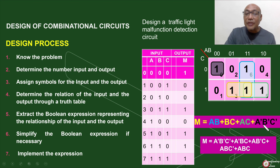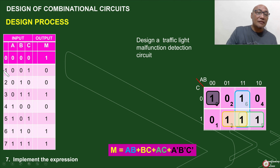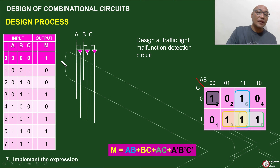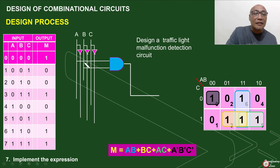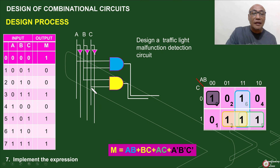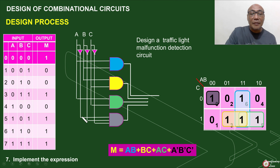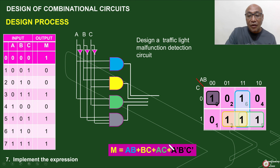We have now our equation, and the next step is to implement the expression. We need 3 inputs, and the first thing is to AND A with B. Then B is ANDed with C. Then we have A ANDed with C. The last will be A', B', C' ANDed together. The results of these four AND gates will be ORed together.